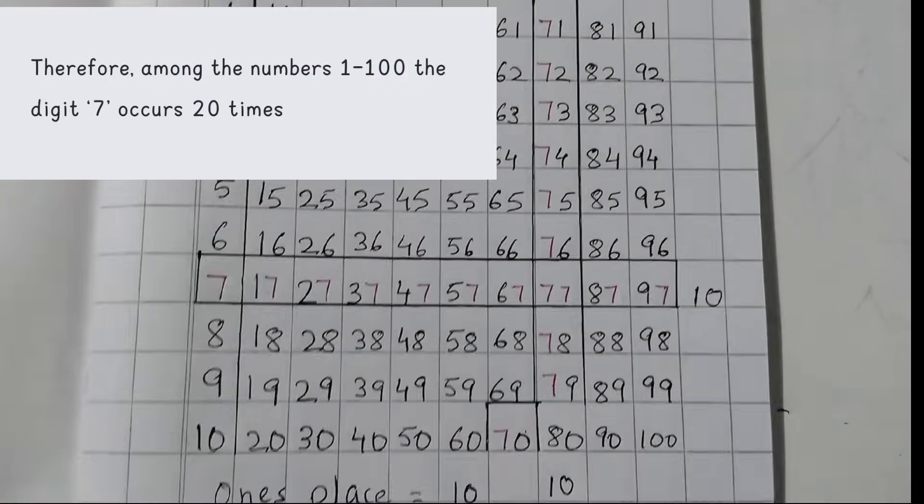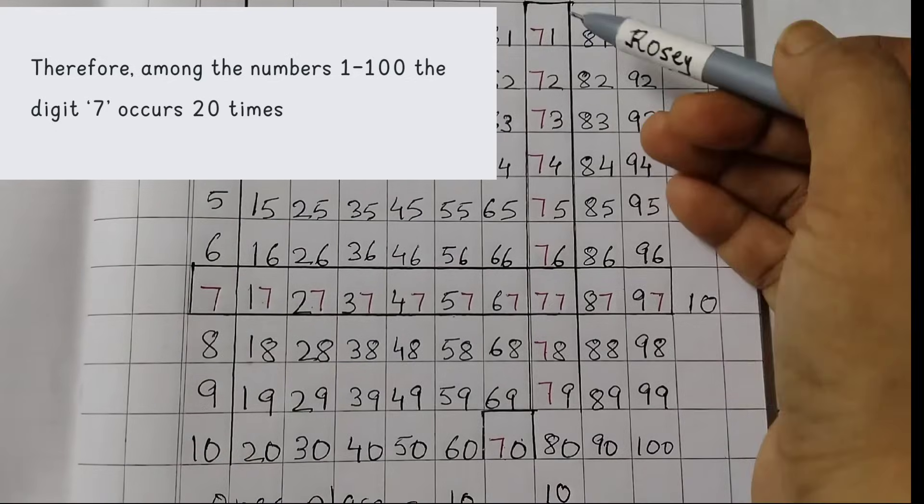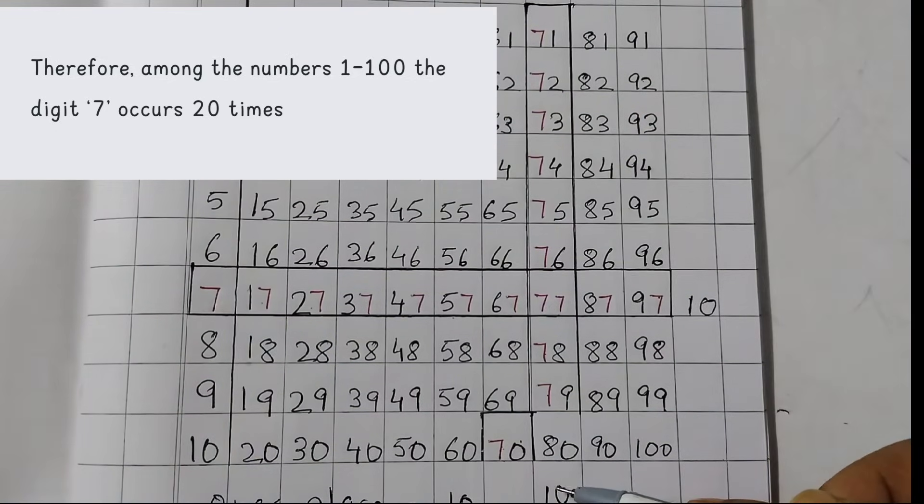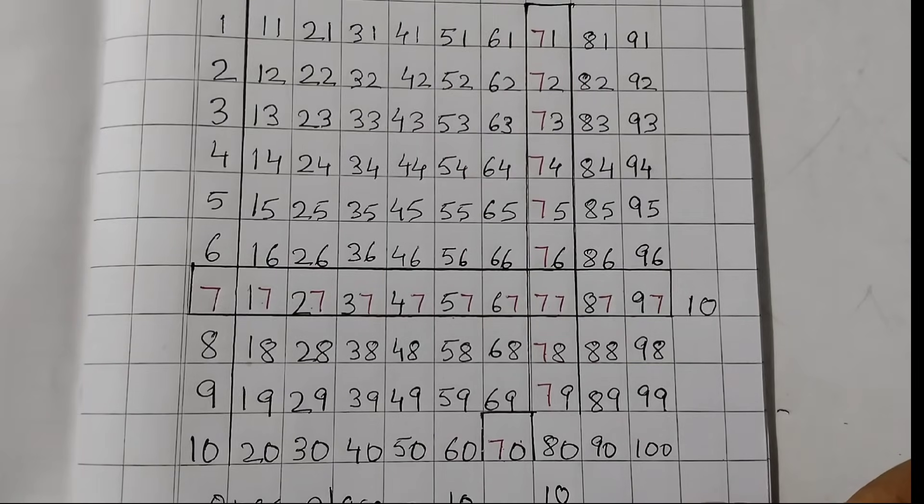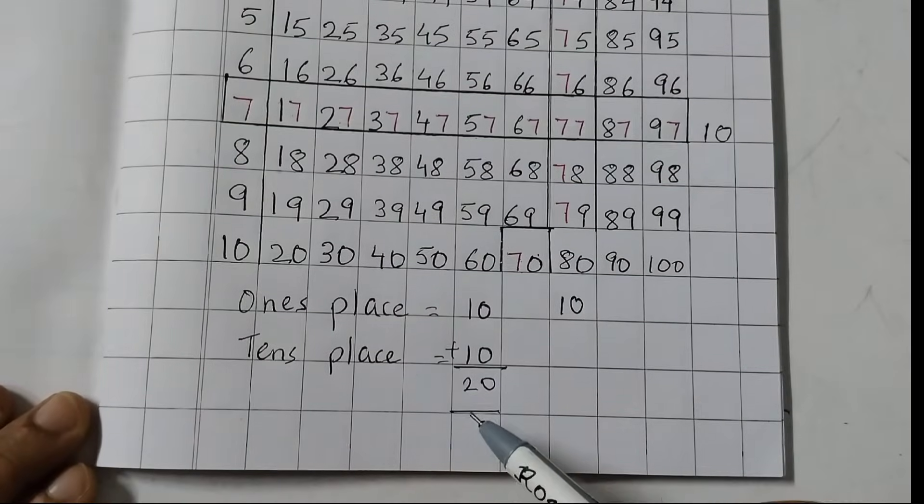20 times. So, here we have 10, and here, from here till here, we have 10. 10 plus 10 equals 20. That was the first part of the question, and the answer is 20.